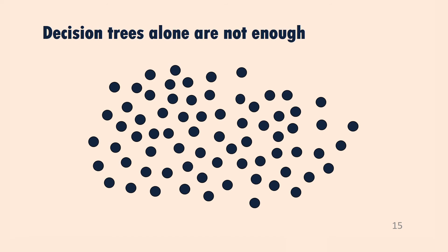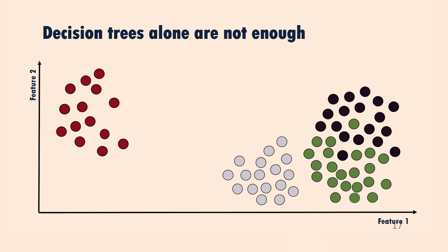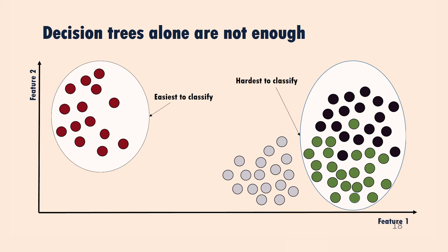Decision trees on their own are not enough. Let's say our data has different colors for different types of failures — different classes. Assuming our data is two-dimensional, the data on the left is easiest to classify because it doesn't share features with other failure types. The data on the right is harder to classify because it shares some features with the other failures in the data.